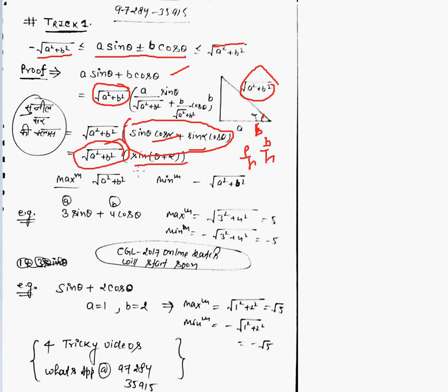Maximum value of sine is one. The maximum value of the whole function will become this. Minimum of sine is minus one, minimum will become this. This is the proof of this result. But for example, we only need to follow this result.